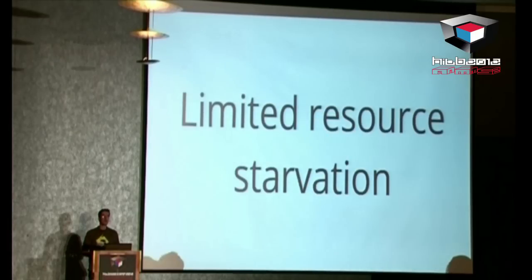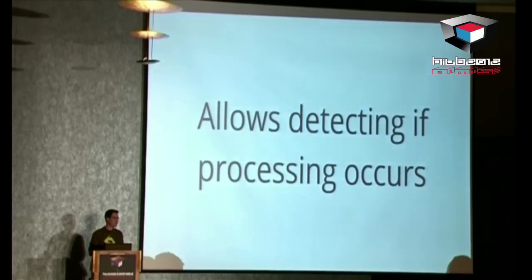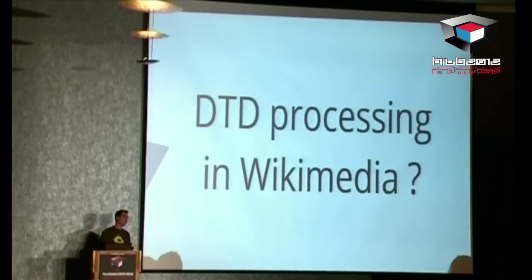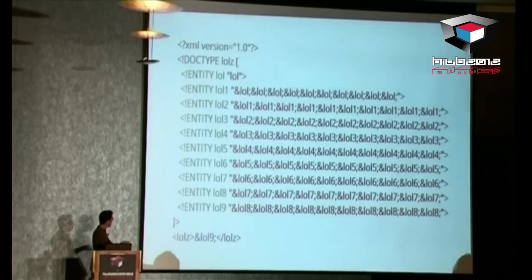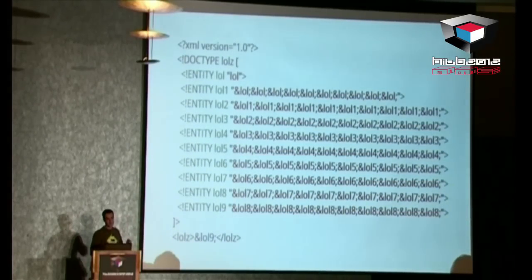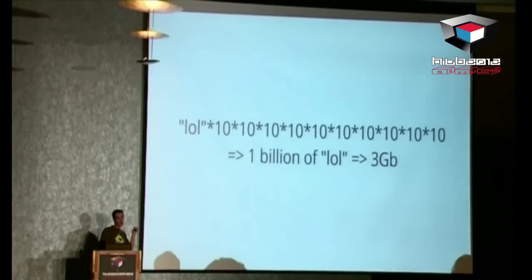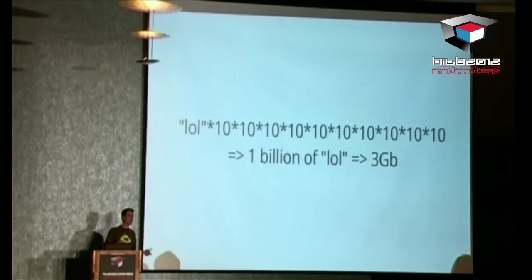Now we will try to create some limited resource exhaustion in order to detect a specific kind of processing in black box mode. If we go back to the SVG-to-PNG conversion by Wikimedia, we may wonder: is the DTD processed? We use the Billion Laughs attack — it's well known. You define a DTD with a LOL variable whose value is 'LOL', then LOL1 is ten times the LOL variable, et cetera. In your document you insert the LOL9 variable. Quick math gives you 1 billion LOL strings, which is 3 gigabytes — enough to slow down the server and detect that the DTD is effectively processed.